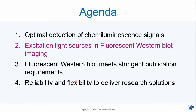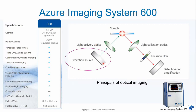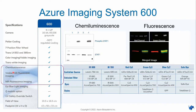Next, we move to excitation light sources. For chemiluminescent western blot, no excitation light sources are needed, but for fluorescence you definitely need them to excite the fluorophore. This system allows you to do RGB and near-infrared fluorescence imaging. We have two laser excitation light sources for the near-infrared channels, and LEDs for the RGB channels. You can see all the dyes compatible with these excitation light sources and emission filters, including safe dye and total protein staining imaging.